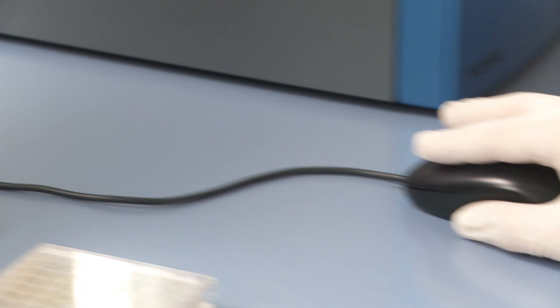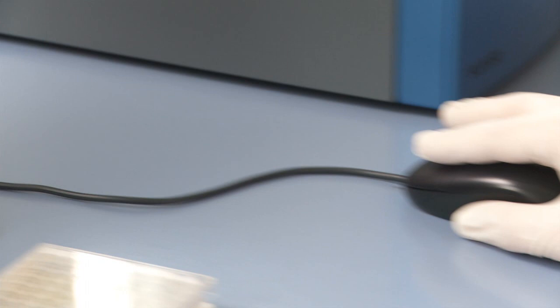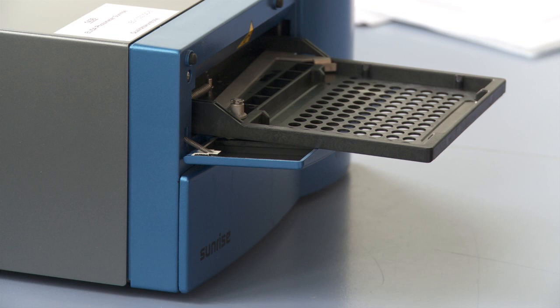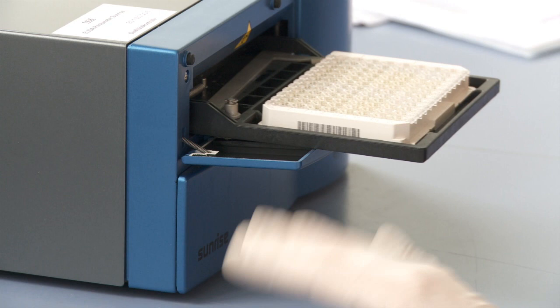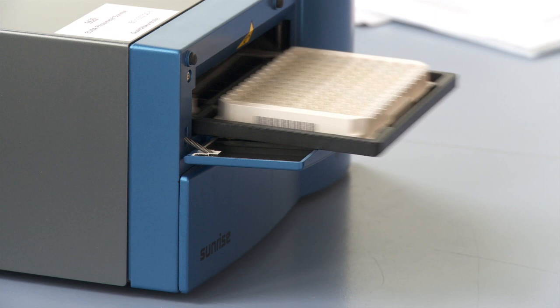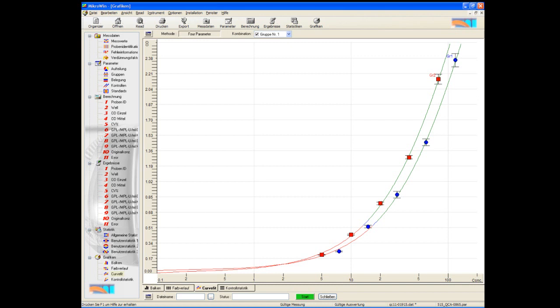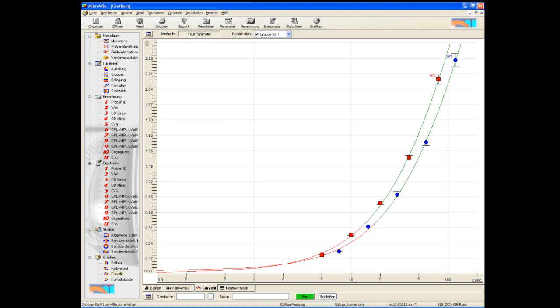The intensity of the yellow colour of the individual samples is measured by a plate photometer at a wavelength of 450 nanometres and recorded graphically. With the aid of the standard curve obtained in the test, the concentration of antibodies in the unknown serum samples can be quantitatively determined.